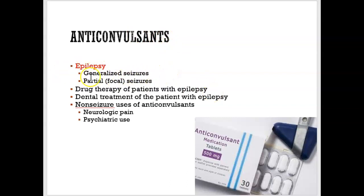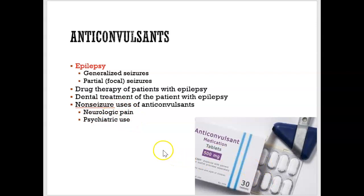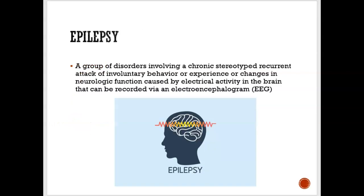There are medications called anticonvulsants that prevent seizures. When you think of epilepsy, you think of seizures, and anticonvulsants are used to treat epilepsy. These medications can also be used for people who have neurologic pain — such as facial pain — or even for some mental disorders, so anticonvulsants are not necessarily always just for seizures.